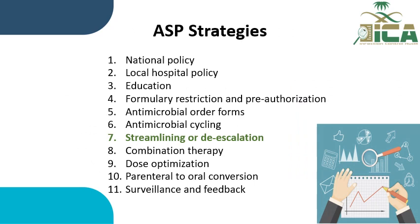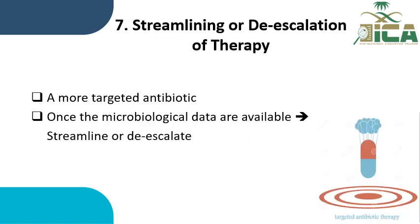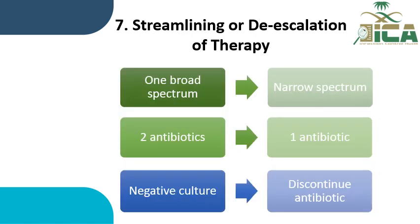The next strategy is streamlining or de-escalation. Once culture results are available, streamline or de-escalate antibiotics to a more targeted antibiotic. If the patient is on one broad-spectrum antibiotic, de-escalate to a narrow-spectrum antibiotic. If there are two antibiotics, de-escalate to one. If the culture result is negative, discontinue the antibiotics.